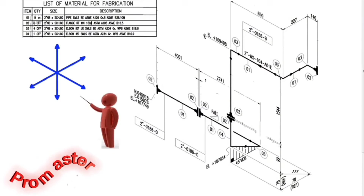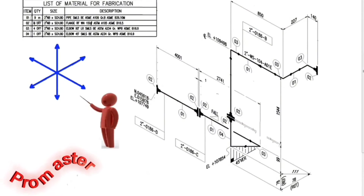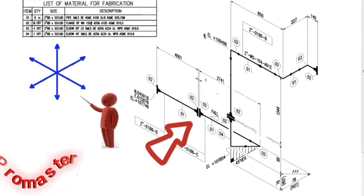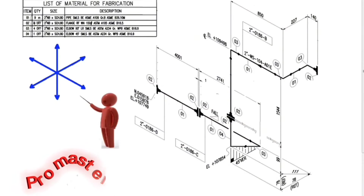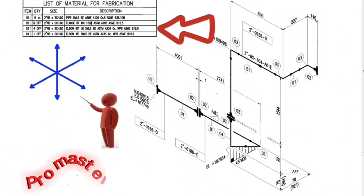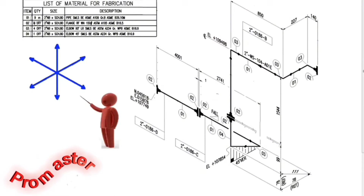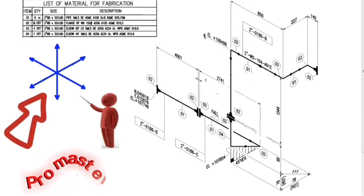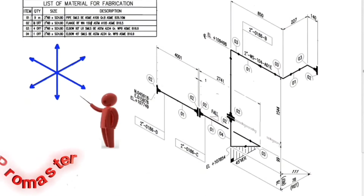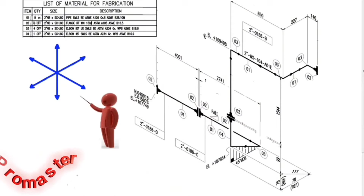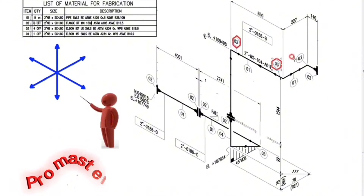Such videos help improve the knowledge and skills of pipe fitters. This is the pipe isometric. This is the list of materials on the drawing. These are the directions. Let's find out the materials needed during the fabrication of this pipeline. These are the detail numbers of the materials on the drawing.